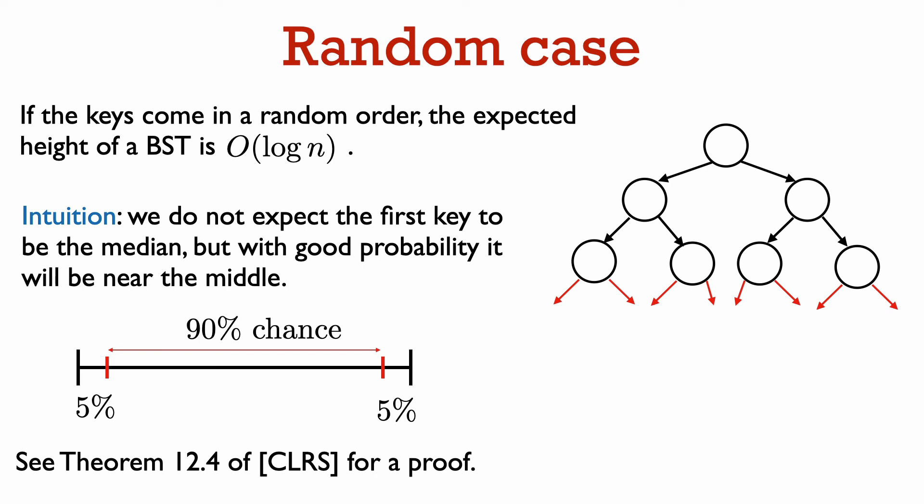This means that with good probability, the number of keys in the left subtree of the root will be within a constant factor of the number of keys in the right subtree of the root. This is exactly the kind of property that we want for the tree to have height order log n overall.